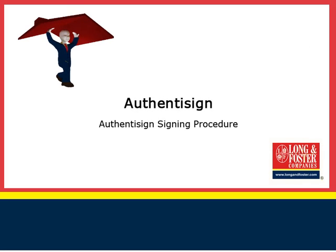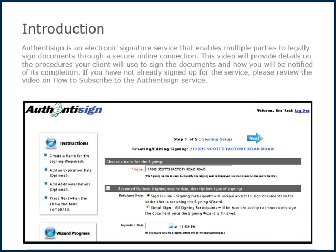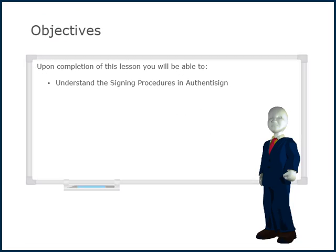Welcome to this video on using the AuthenticSign program for signings. AuthenticSign is an electronic signature service that enables multiple parties to legally sign documents through a secure online connection. This video will provide details on the procedures your client will use to sign the documents and how you will be notified of its completion. If you have not already signed up for the service, please review the video on how to subscribe to the AuthenticSign service. Upon completion of this lesson you will be able to understand the signing procedures in AuthenticSign.